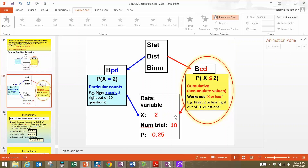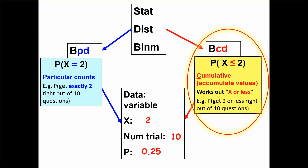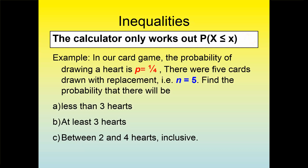Now, because our calculator does x or less, we need to think about how that works for different question types. Here's a different example: a card game where you randomly draw from a deck of 52 cards. The winner is the person who draws the most hearts out of 5 draws. Each time you shuffle, pull one card, observe whether it's a heart, put it back and reshuffle.